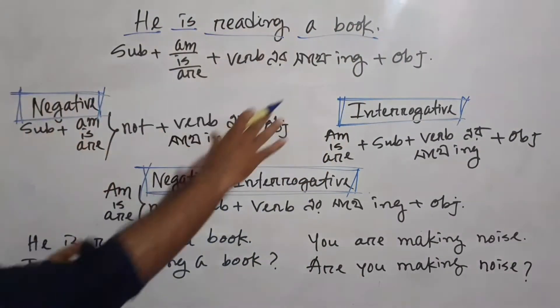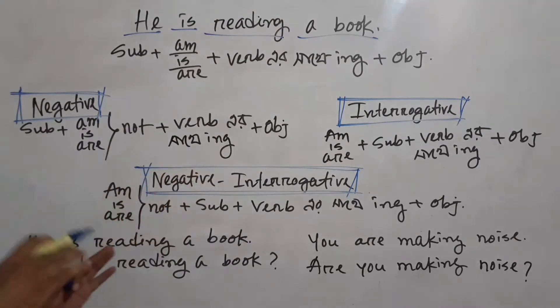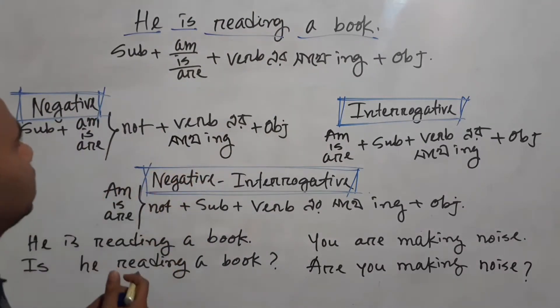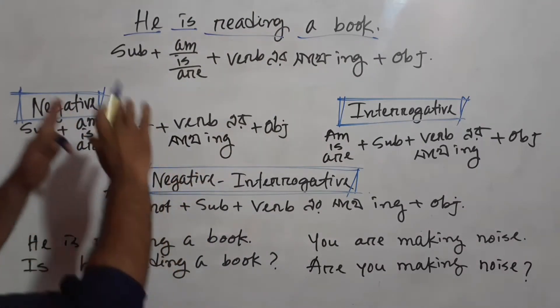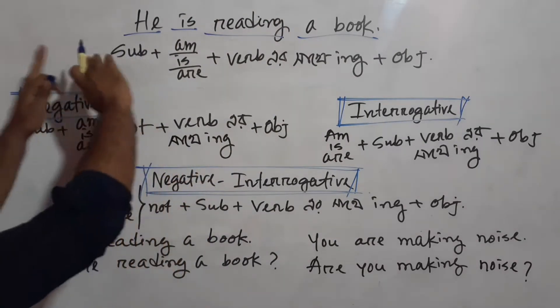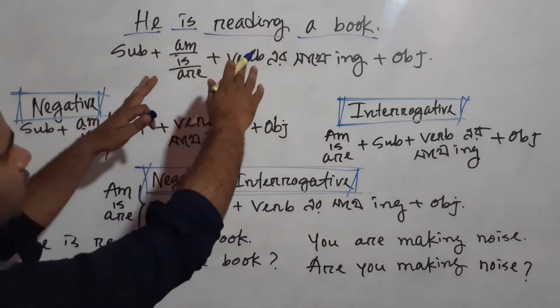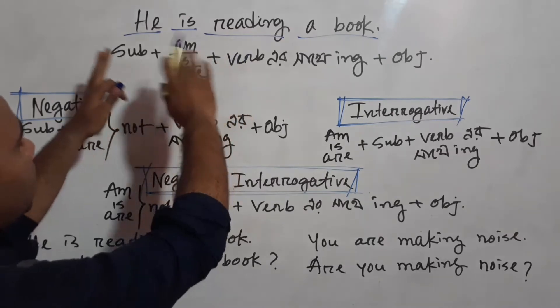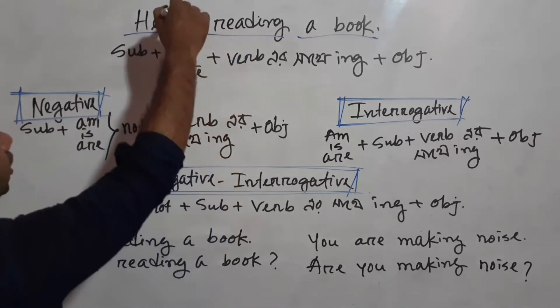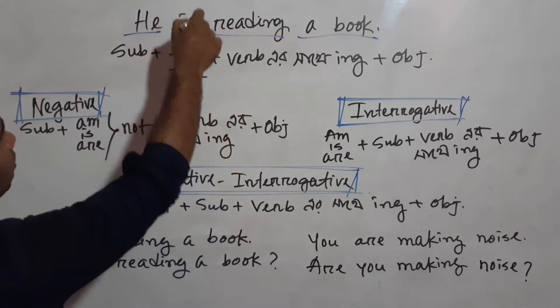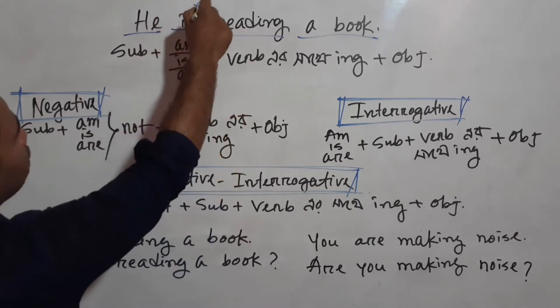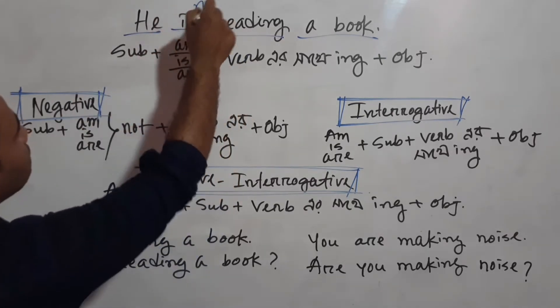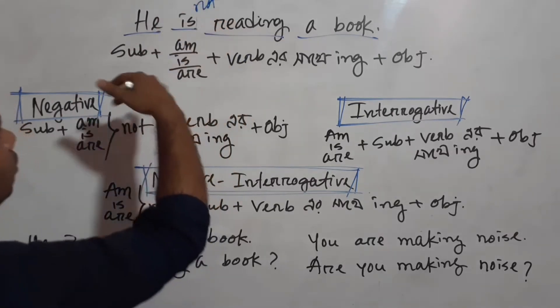Now this structure will be made negative. If you add 'not' after the auxiliary, the sentence will become negative.